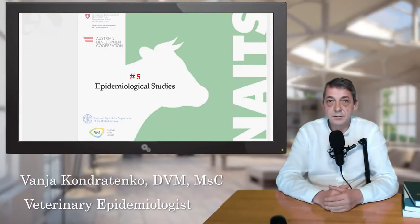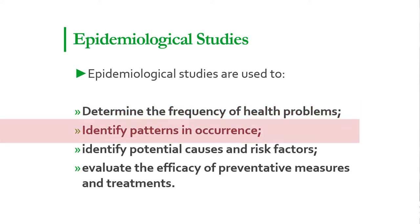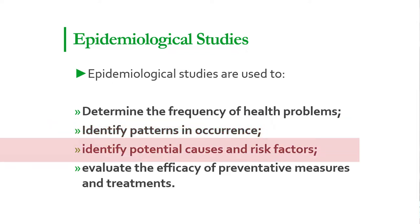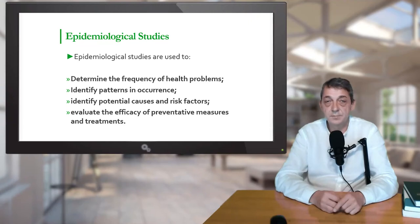The goal of any epidemiological study is to acquire an accurate picture of a disease. Epidemiological studies are used to first determine the frequency of specific health problems, identify patterns and occurrence of disease, identify potential cases and risk factors, and to evaluate the efficiency of preventive measures and treatments. The information obtained is used to create strategies for prevention and treatment of animal health conditions, preserve public health, and implement better policies.